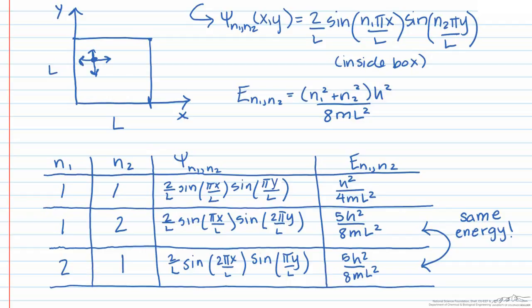More generally, if n wave functions correspond to the same energy, then we would say that the state is n-fold degenerate. We've now demonstrated the concept of degeneracy and how it can arise due to the symmetry of a system. As we will see, degeneracy plays a very important role in quantum statistical mechanics.